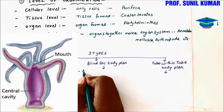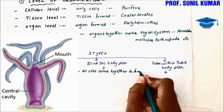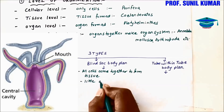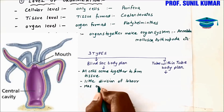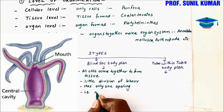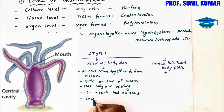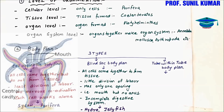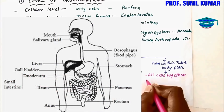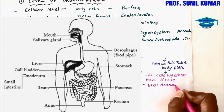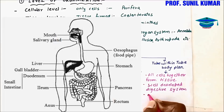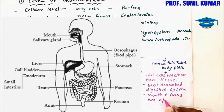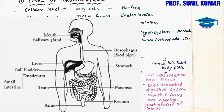Blind sac body plan means one side closed and one side open — like a room with only one opening. All cells come together to form tissue with a little division of labor. It has only one opening that acts as both mouth and anus — it has a mouth but no separate anus, so an incomplete digestive system. Example: Cnidaria — Hydra and Jellyfish, which have only one opening. Tube-within-tube body plan means cells form tissues with a well-developed digestive system and two openings — one mouth for ingestion and one anus for egestion — showing great division of labor. All animals from Annelida onward show tube-within-tube body plan.